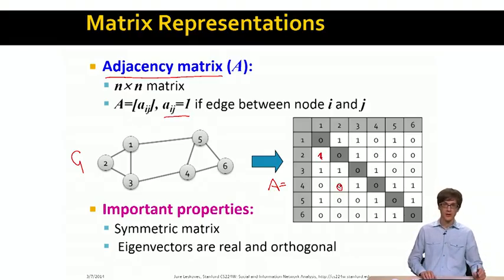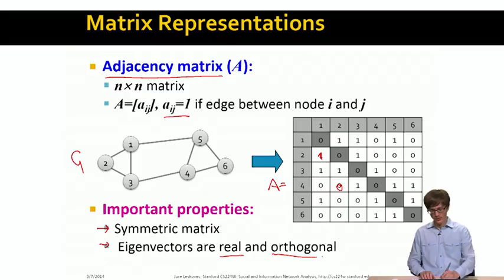What are some properties of the spectrum of the eigenvalues and eigenvectors of this adjacency matrix? First, this is a symmetric matrix because our graph is undirected. And because of that, eigenvectors of our adjacency matrix are real valued and they are orthogonal by definition. And these are the two important properties that we will exploit later.